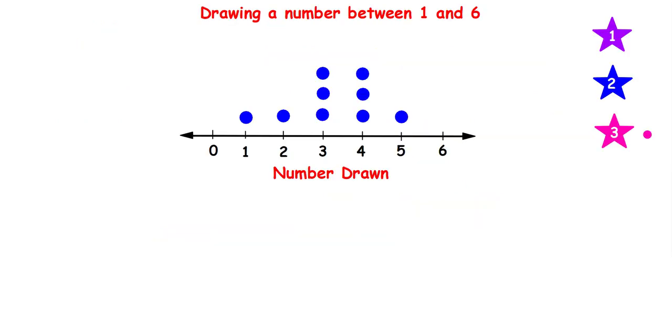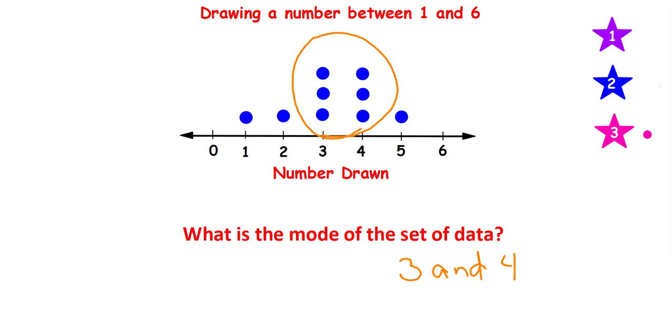Okay, again I want you to try and do these on your own before you check out the answer. Here's the first question from this dot plot. What is the mode of the set of data? The mode of the set of data is the number that's listed the most. And I can see that the mode is both 3 and 4 because they're both listed three times.